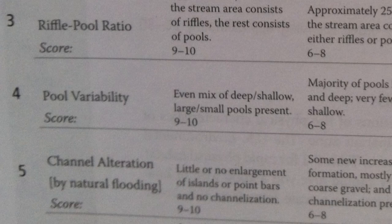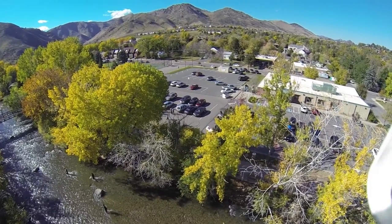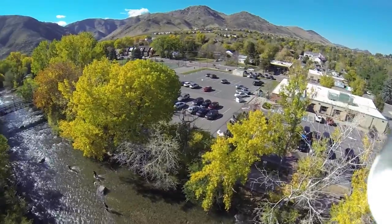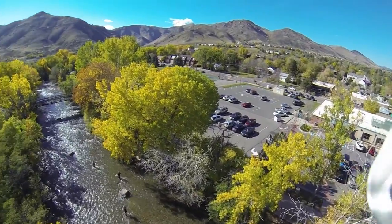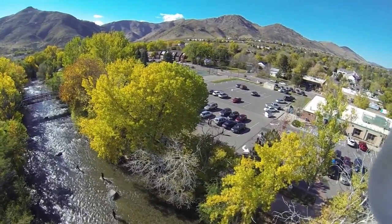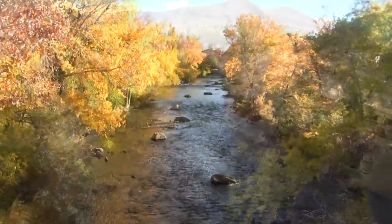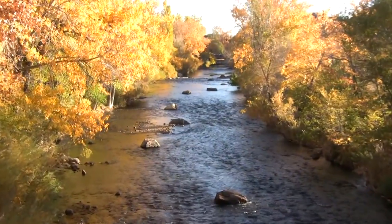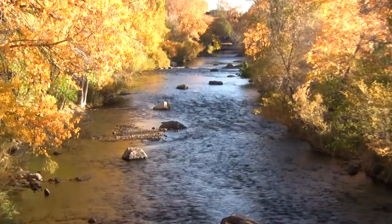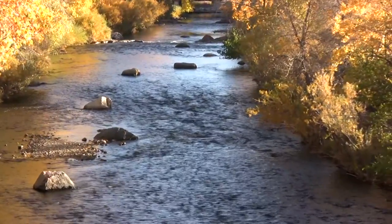The fourth parameter is pool variability. Here we look only at the pools and determine their variability in size. Trout especially like deeper pools, so don't just look at the surface area of the pools, but also their depth.